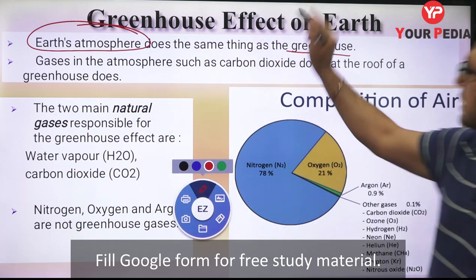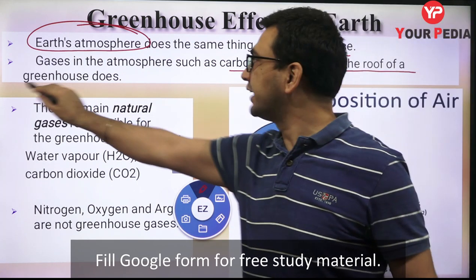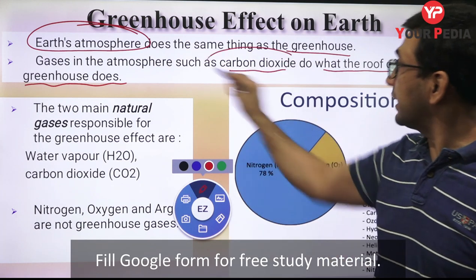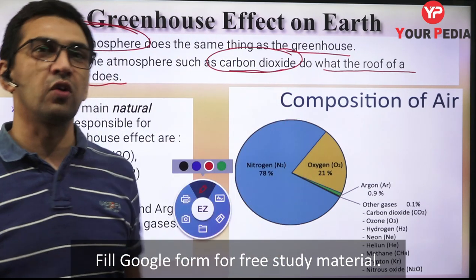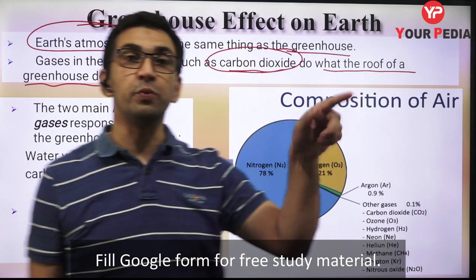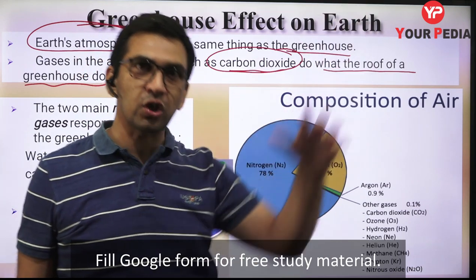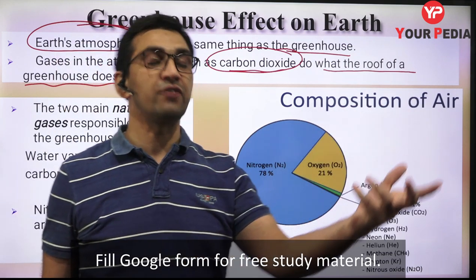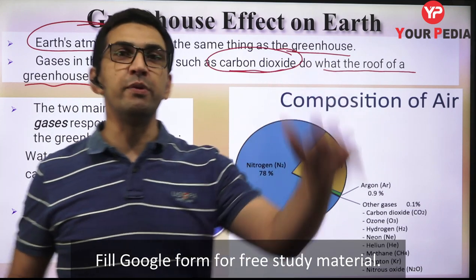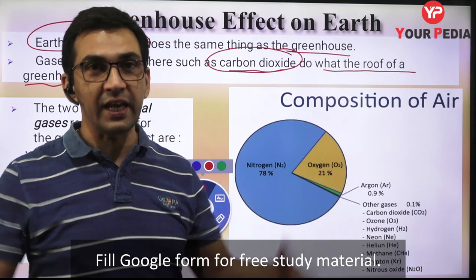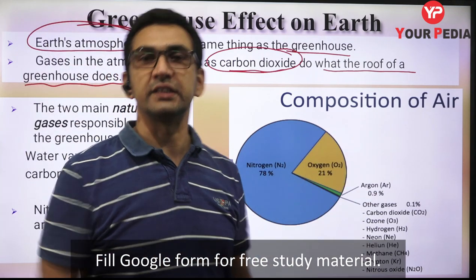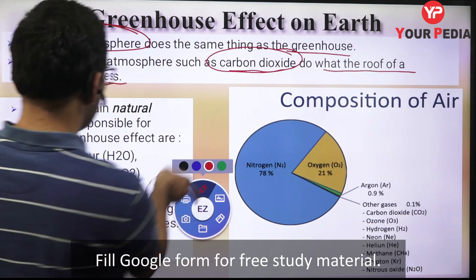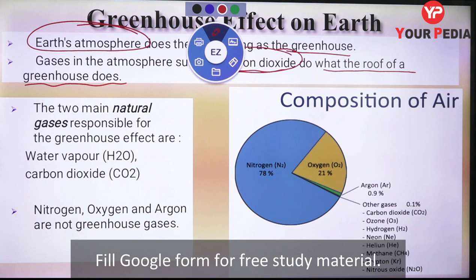The gases in the atmosphere, such as carbon dioxide, do what the roof of a greenhouse does. Just as glass behaved for long wave radiations and trapped them, these gases behave similarly - they allow shorter wavelength radiations to come inside but block the long wave infrared radiations emitted by the earth. Not all gases act this way - only some behave as greenhouse gases.